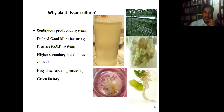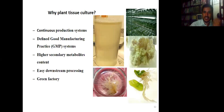Why plant tissue culture? It offers a continuous production system with defined good manufacturing practices, higher secondary metabolite content, easy downstream processing, and is recognized as a green factory because it doesn't produce a lot of waste. If we were to synthesize these compounds through chemical pathways, it would require a lot of reagents to produce these complex compounds, which is why tissue culture has been recognized as a green factory.